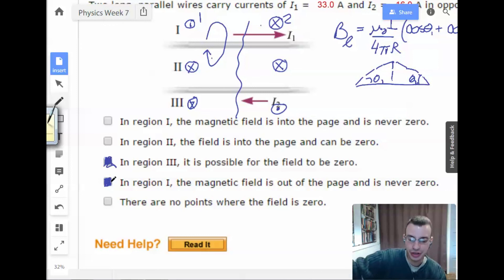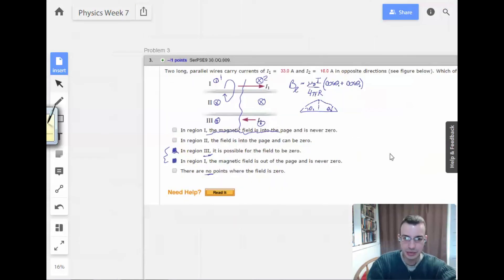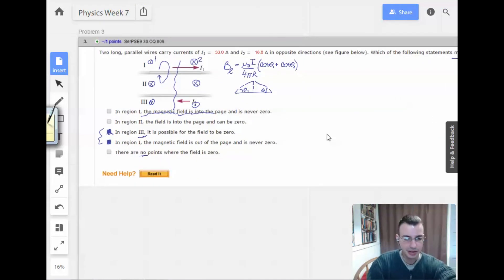There are no points where the field is zero. No, there are points where the field is zero. And that's going to be some point over here in region three. Right there. I'm going to say that's the area. So there can be a point where the field is zero. And if we said yes to this guy, we're going to have to at least say no to this guy. So here's the two. Those are the two that I would choose. All right. Got it. Perfect. On to number four.